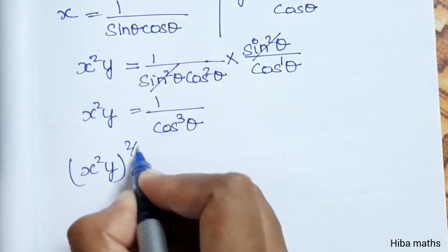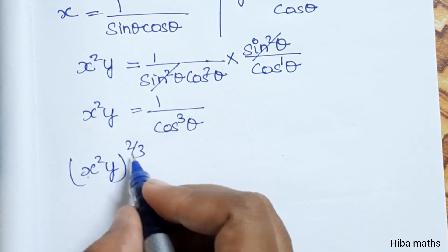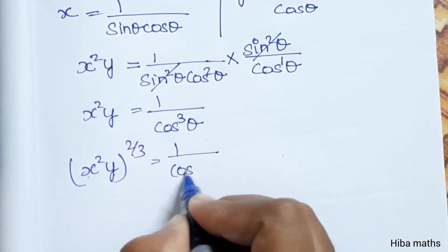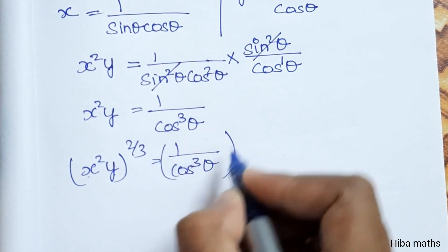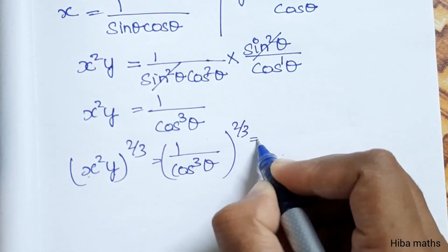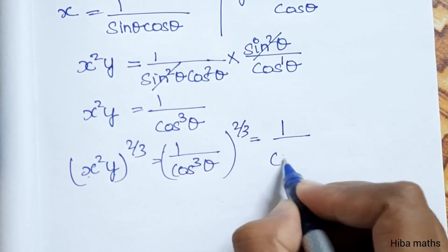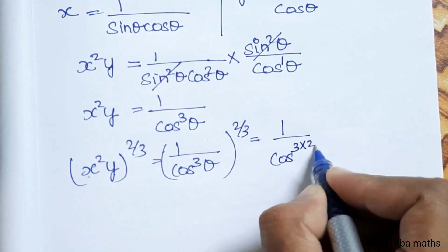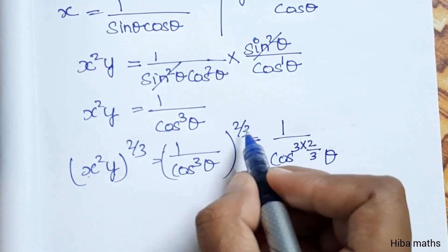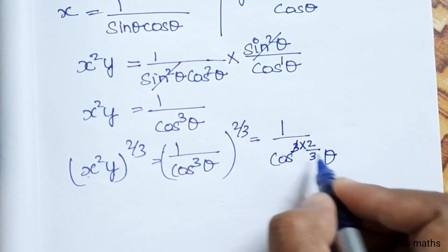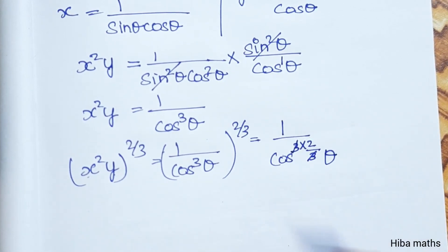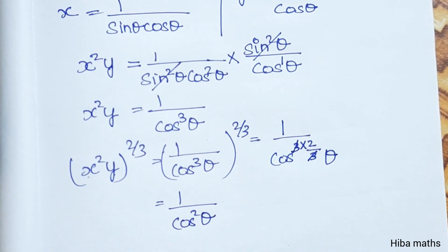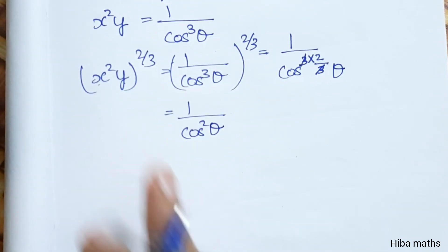Now for x²y^(2/3): x equals 1 / (sin²θ · cos θ), raised to the power 2/3. Substituting, we get (1 / cos³θ) raised to 2/3, which simplifies to 1 / cos²θ. This is the first term.